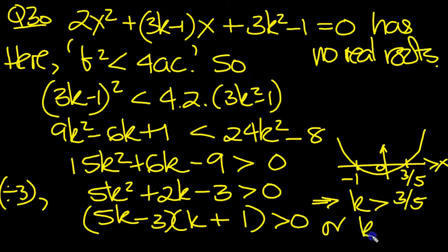Or it can also be when k is back over here, because it goes up there. So it must be less than -1. There we go.